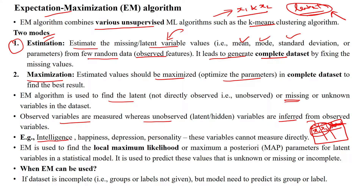For example, if you want to calculate intelligence, intelligence will not be directly available. You can give some questions to students or a person, then based on that you can identify intelligence, as well as happiness, depression, and personality. These variables cannot be measured directly. You can give questionnaires covering aptitude, logical reasoning, and technical questions. Based on these features, you can identify the intelligence of a person. So intelligence is the unobserved variable, while technical questions, aptitude questions, and reasoning questions are observed variables.